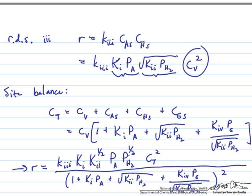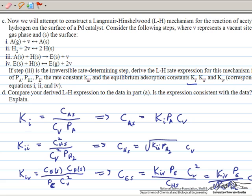The final rate expression shows first-order dependence on acetylene and half-order dependence on hydrogen in the numerator, a squared dependence on total site concentration (constant for a given catalyst amount), and a denominator reflecting site availability — vacant sites, sites with acetylene, sites with hydrogen, and sites with the dehydrogenated ethylene form. Whichever term is largest in the denominator indicates which species dominates the surface. This was complicated algebra, but we now have the Langmuir-Hinshelwood expression.